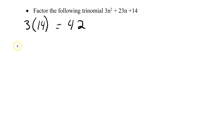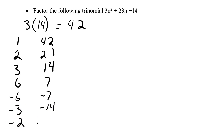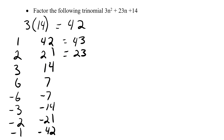Now we list all factor pairs of 42: 1 and 42, 2 and 21, 3 and 14, 6 and 7, and their negatives: negative 6 and negative 7, negative 3 and negative 14, negative 2 and negative 21, negative 1 and negative 42. We're looking for a pair that adds to 23. Adding: 1 and 42 is 43; 2 and 21 is 23 — there it is. So 2 and 21 are our correct factors.